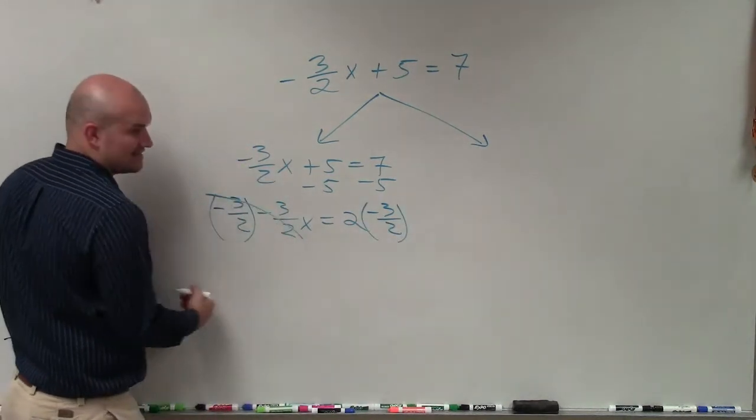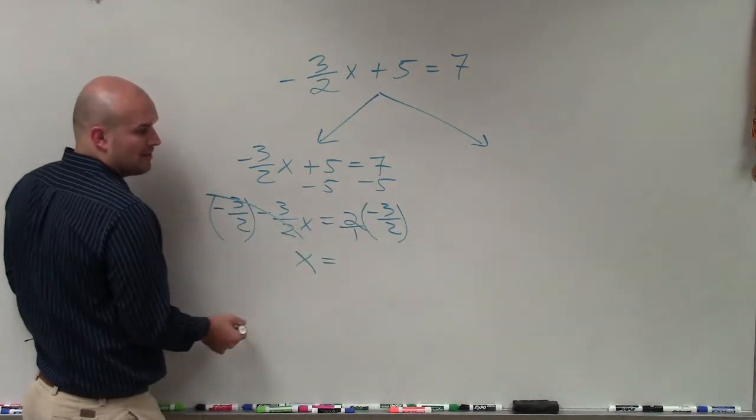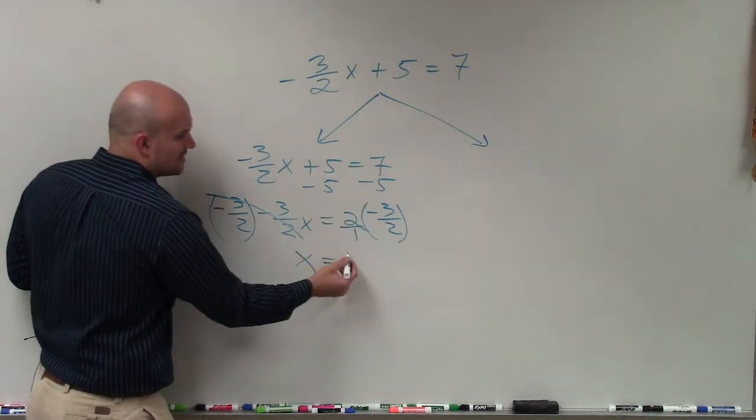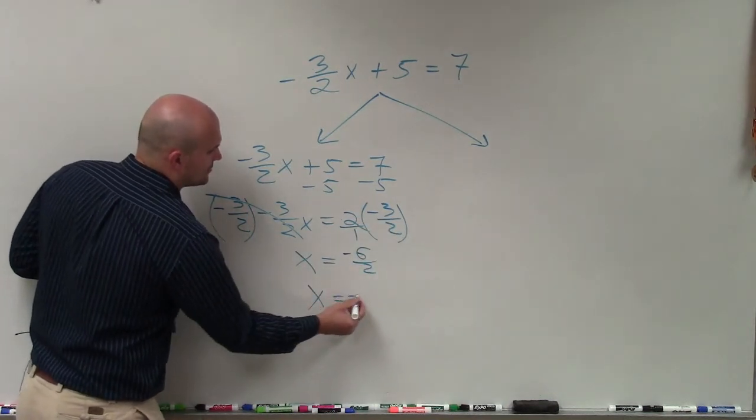So therefore, that divides, multiplies to 1. And I have x equals 2 times, remember, this whole number can be represented as a fraction. 2 times -3 is -6. 1 times 2 is positive 2. x equals -3.